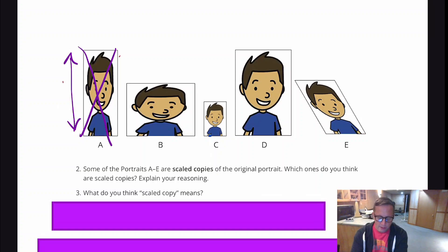Same thing with portrait B. That one looks like it was done opposite. It was stretched horizontally, but as it stretched horizontally, it didn't match up vertically, so it didn't get any taller.